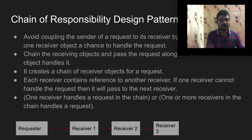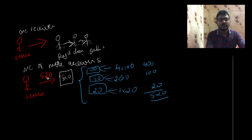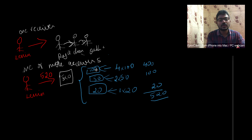For the second category — one or more receivers handling the request — consider Lenin withdrawing 520 rupees from an ATM. The 520 rupees is handled by three receivers simultaneously: a 100-rupee receiver, a 50-rupee receiver, and a 20-rupee receiver. The 100-rupee receiver returns 4×100 = 400 rupees, the 50-rupee receiver returns 2×50 = 100 rupees, and the 20-rupee receiver returns 1×20 = 20 rupees.